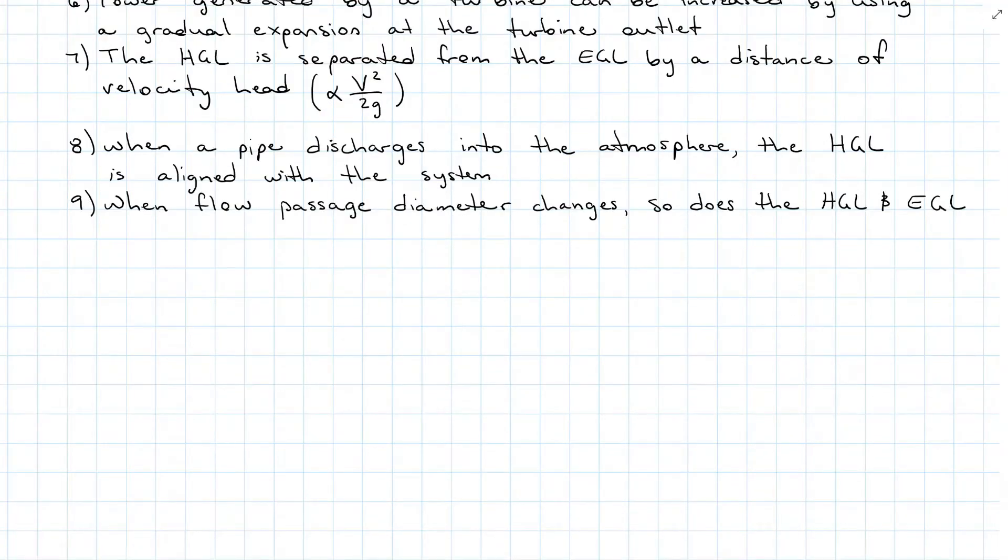When the flow passage diameter changes, so will the grade lines. If the hydraulic grade line falls below the pipe line, the pressure head is negative, and that can indicate potential cavitation.